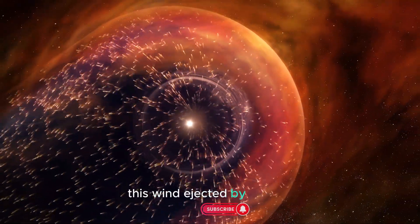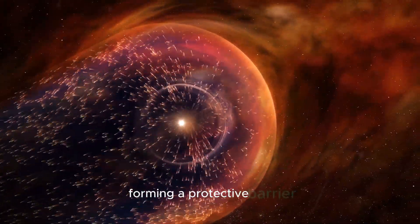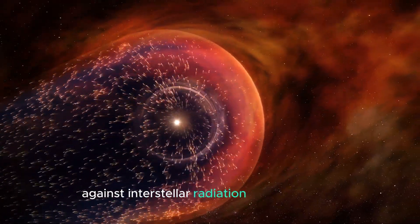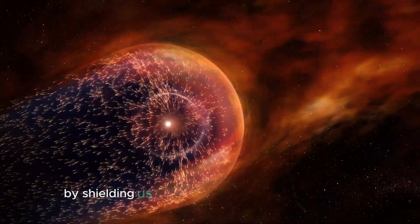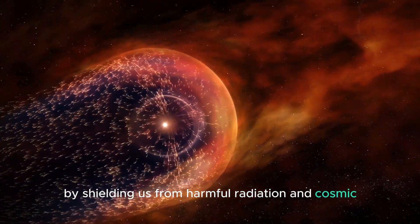This wind, ejected by the sun, sweeps out into space, forming a protective barrier against interstellar radiation and cosmic rays. The heliosphere plays a crucial role in protecting life on Earth by shielding us from harmful radiation and cosmic particles.